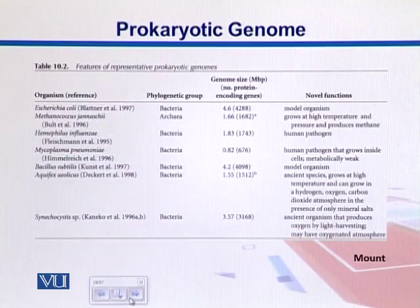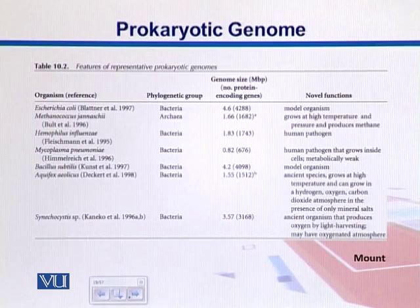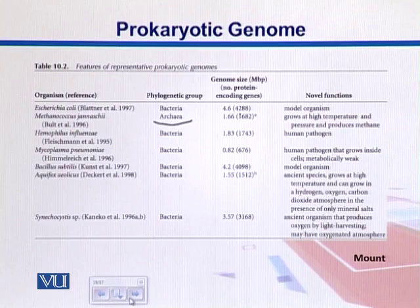In this diagram we see representative prokaryotic organisms and their genomes. E. coli, sequenced by Blattner et al., has a genome size of 4.6 MB. We can see its phylogenetic group — it is a bacterium. In this set we have just one Archaea and the rest are bacteria. The number of protein-coding sequences is shown in parentheses — E. coli has 4,000 genes.